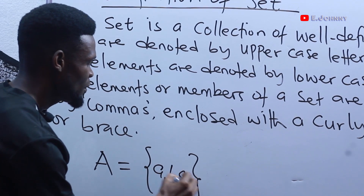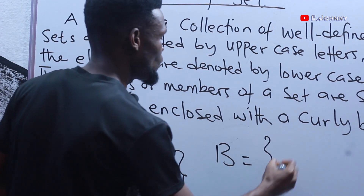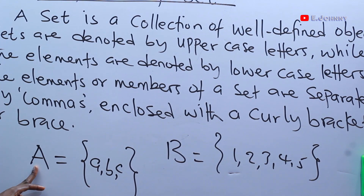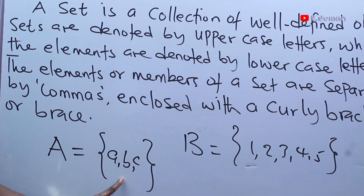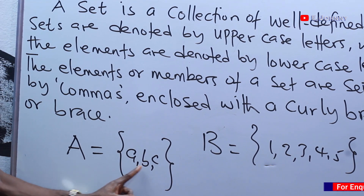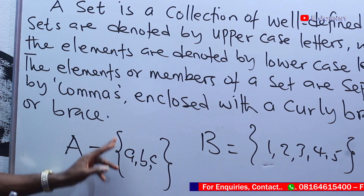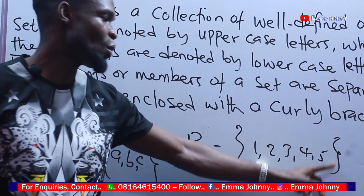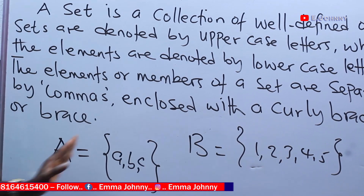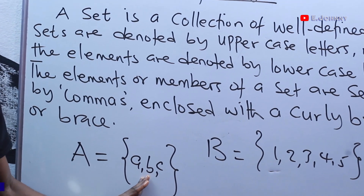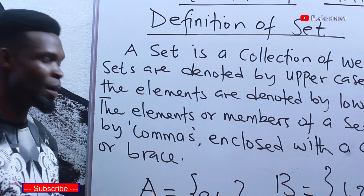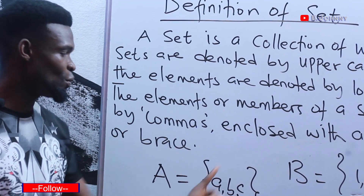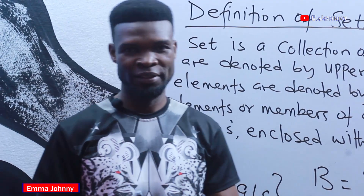So for example, set A contains elements A, B, C. Or set B equals 1, 2, 3, 4, 5, and so on. Sets are denoted by capital letters, and A, B, C are the elements or members of set A. These elements are separated by commas and enclosed with a curly bracket. In summary: sets are denoted by capital letters, elements are denoted by small letters, separated by commas, and enclosed with a curly bracket. That is what a set is — very simple.